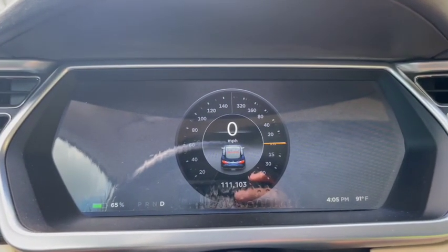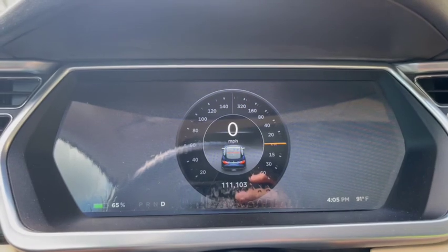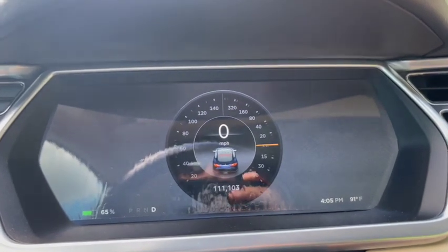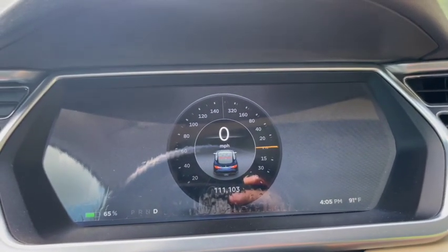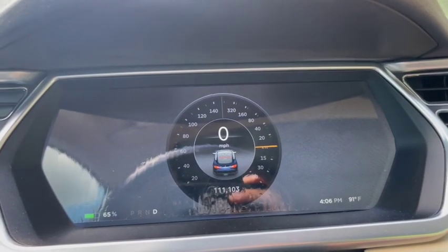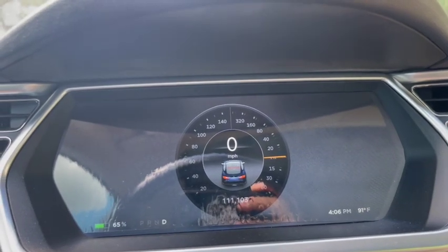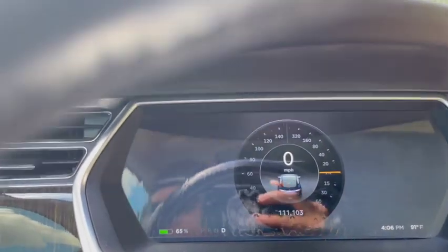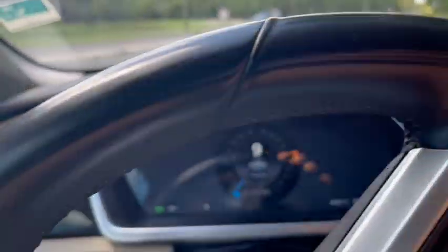All right, in the Tesla, I have a gauge on the right side of the zero that shows kilowatts being used by the electric motor. And when it's orange, it's used. And when it's green, it's recharging the battery. So it goes up to 320. It's 320 kilowatts equals about 420 horsepower. So let's see what 320 kilowatts does.